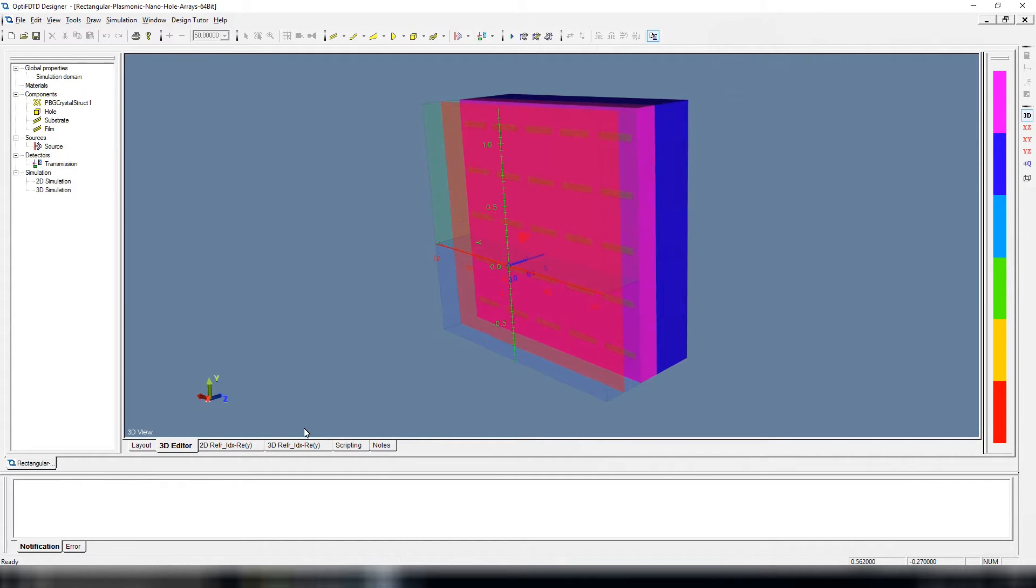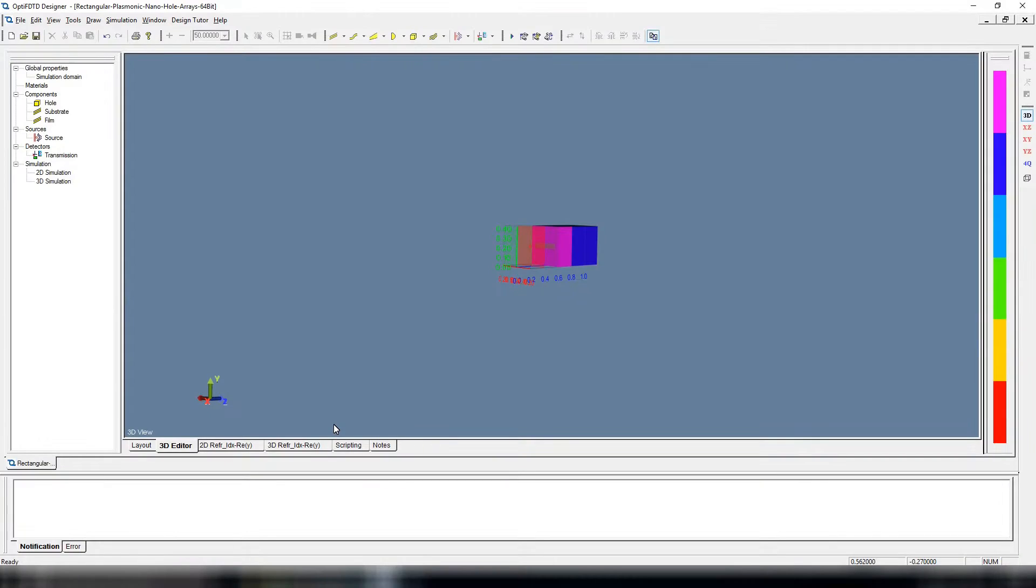Since this object is periodic, the simulation domain can be reduced to a unit cell so that the computation time can be drastically reduced. The unit cell shown is sufficient to represent the infinite nano-hole array.